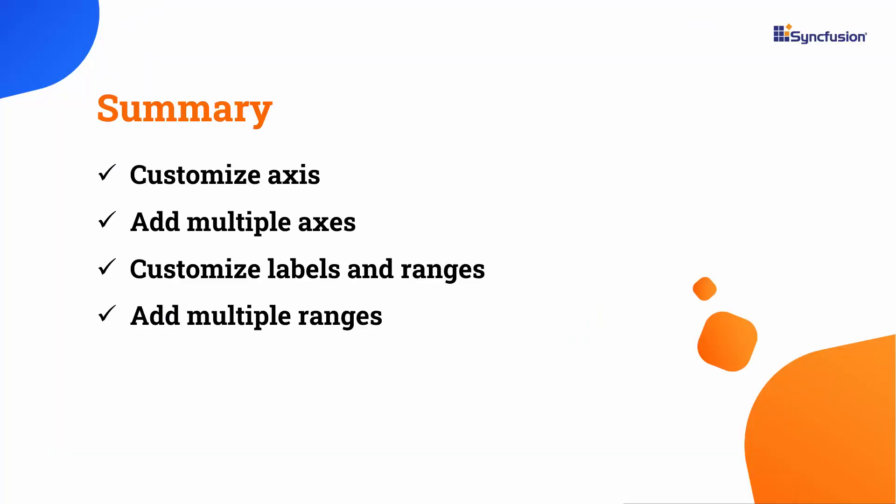In this video, you have seen how to customize the axes, add multiple axes, customize the labels and ranges, and add multiple ranges to the circular gauge. If you would like to see a working example, you can download one from the GitHub link in the description below. I have also provided a link where you can see if you qualify for a free license key to use our Blazor products through our community license. If you found this video useful, please like it and subscribe to our channel.